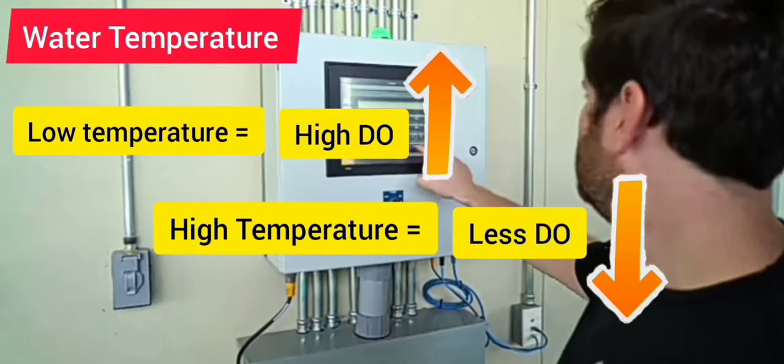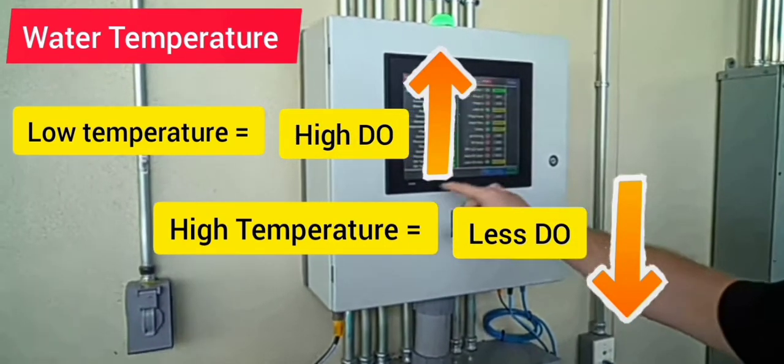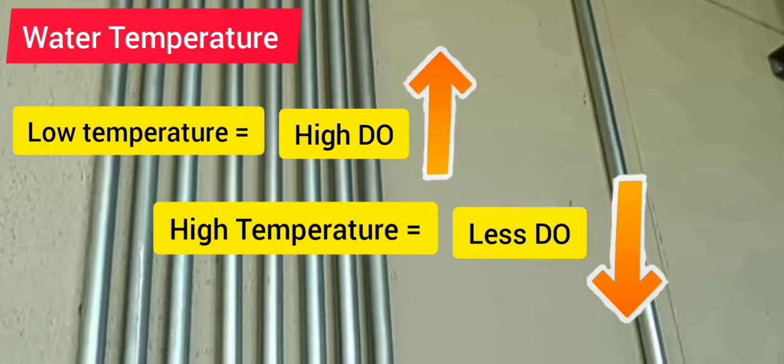Water temperature is critical because it is the most important quality in environmental parameters. Temperature influences water chemistry. For example, cold water can hold more dissolved oxygen than warm water. In winter and early spring, when the water temperature is low, the dissolved oxygen concentration is high.